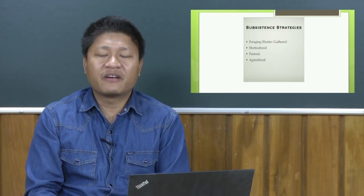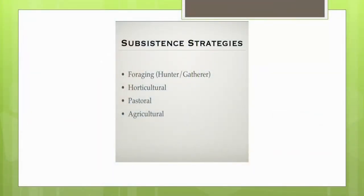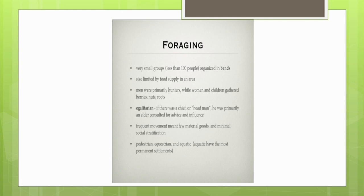Let us try to look at some of the different stages of societies. Usually, in the simple or traditional societies, the idea of subsistence strategies - for example, the foraging or hunter-gatherer, or maybe the horticultural practices, the pastoral, agricultural - we will try to look into details what they are. In this, the first one foraging, that is hunting and gathering society, people are in very small groups, numbering around less than 100 in numbers. And they are usually organized in bands.